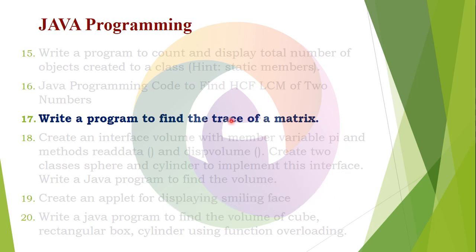The trace is the diagonal elements — the leading diagonal elements are the trace. The leading diagonal consists of elements A11, A22, A33, A44. This is the leading diagonal, and that is the trace of a matrix. For trace to work, the matrix must be square — for example, a 3x3 matrix. We will talk about the trace.